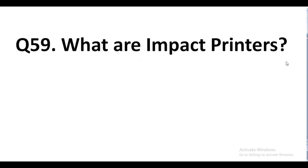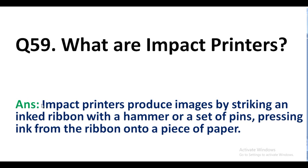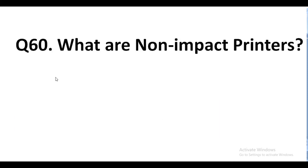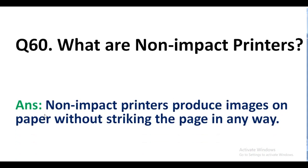Question number 59. What are impact printers? Answer. Impact printers produce images by striking an inked ribbon with a hammer or a set of pins, pressing ink from the ribbon onto a piece of paper. Question number 60. What are non-impact printers? Answer. Non-impact printers produce images on paper without striking the page in any way.